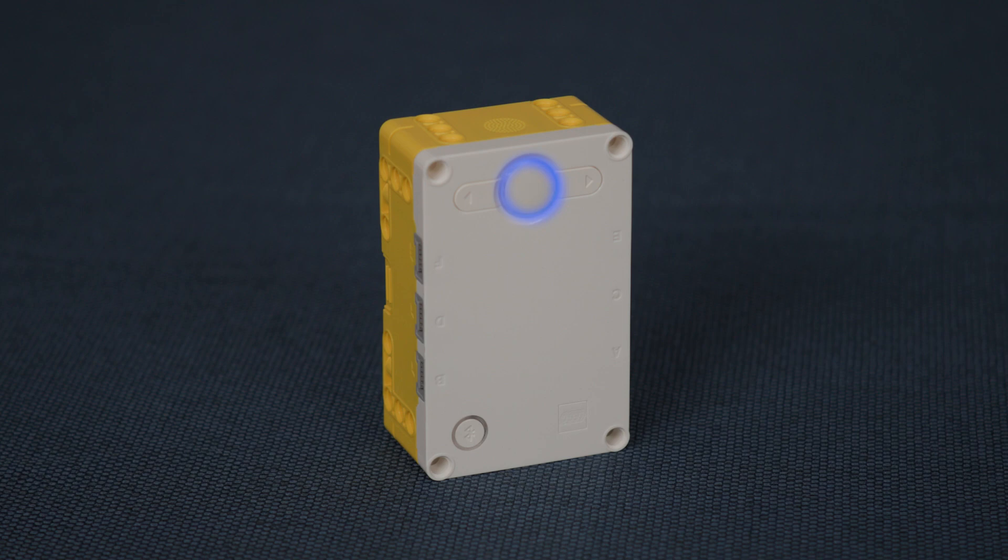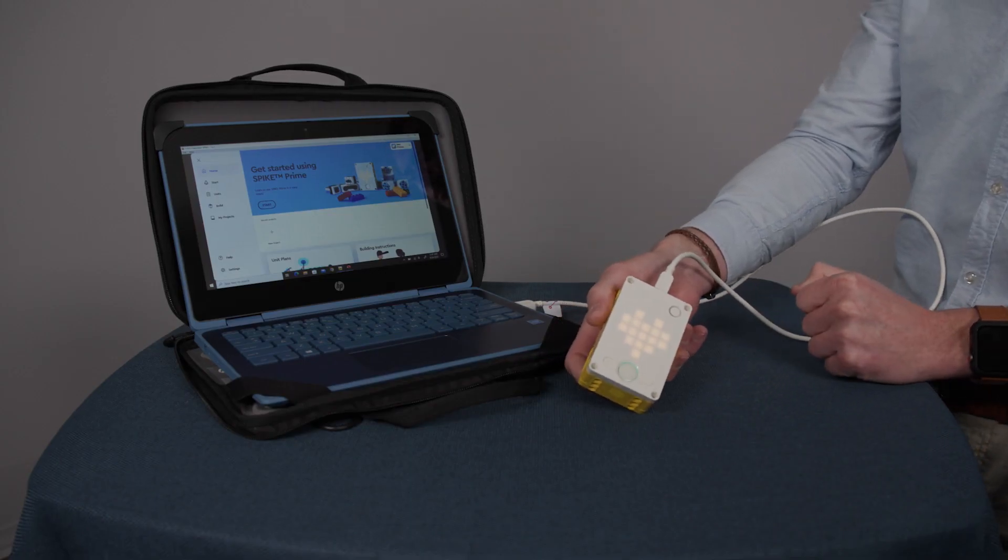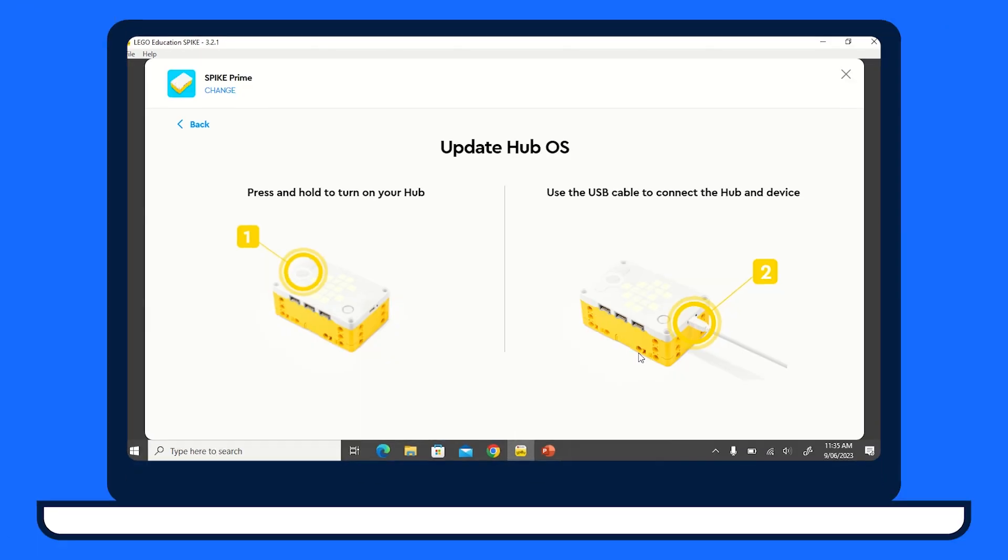Solid blue light means the hub requires an update. Connect the hub to your PC device using the supplied micro USB cable and start an update using the Lego Education Spike app.